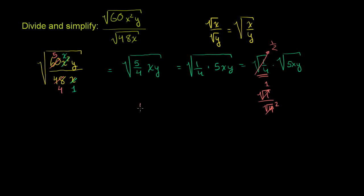And so if you simplify this to 1/2, then the whole thing can simplify to 1/2 times the principal root of 5xy. And there's nothing else that you can really take out of the radical sign here. Nothing else here is a perfect square.